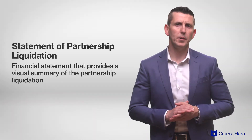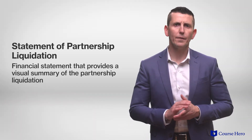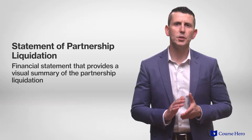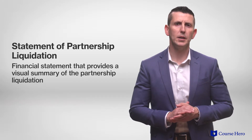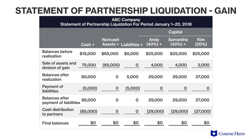The partnership will then prepare a statement of partnership liquidation, which is a financial statement that provides a visual summary of the liquidation process. This statement reconciles the realization process with the other steps — division of gains, payment of liabilities, and final distribution to partners. It essentially closes the partnership, bringing each partner's capital account down to zero.